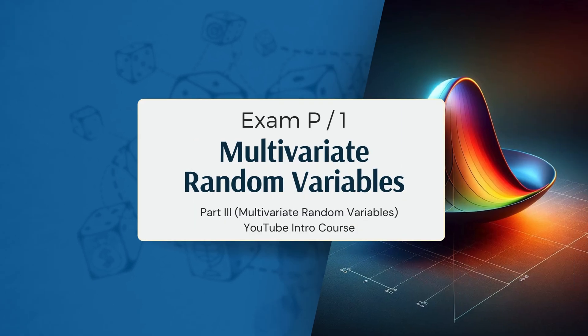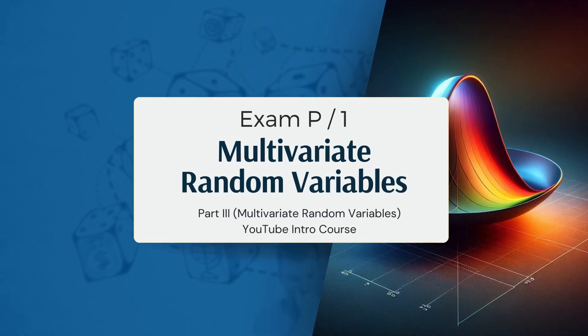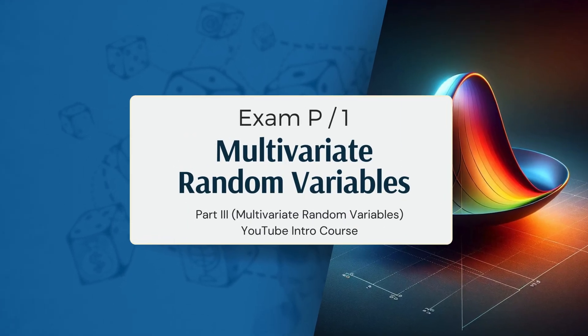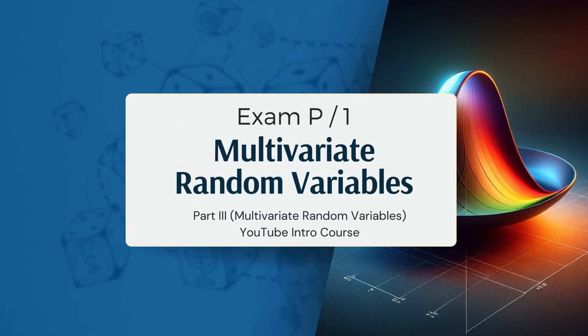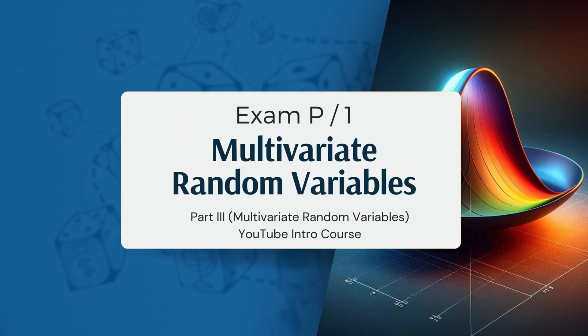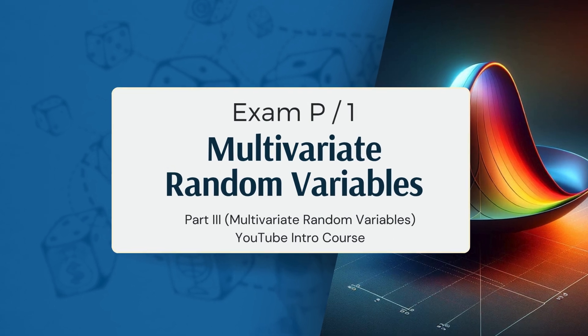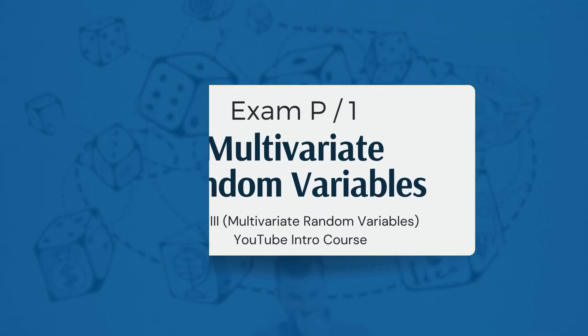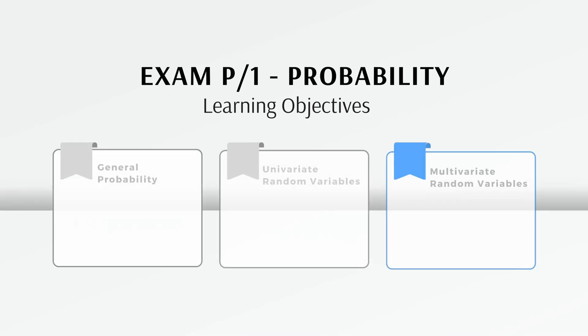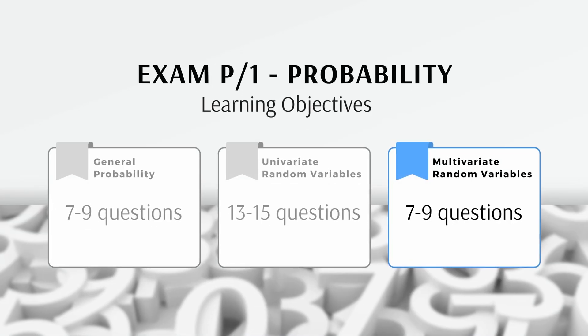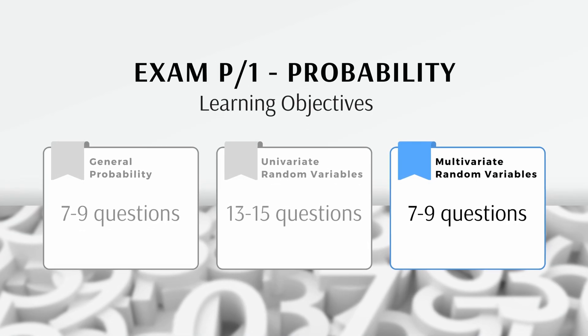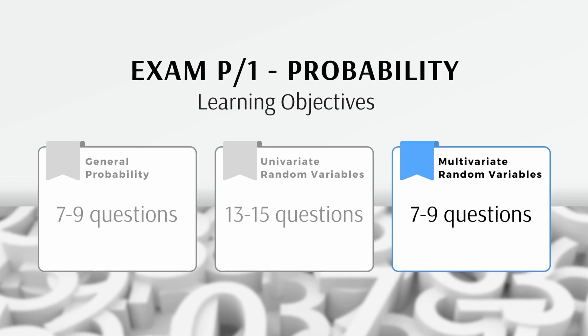In the first section of this video, we're going to introduce multivariate random variables. This is a lot of information for one video, so we'll try to keep it introductory and high level. This section covers 23-30% of the syllabus, so that's from 7-9 questions.